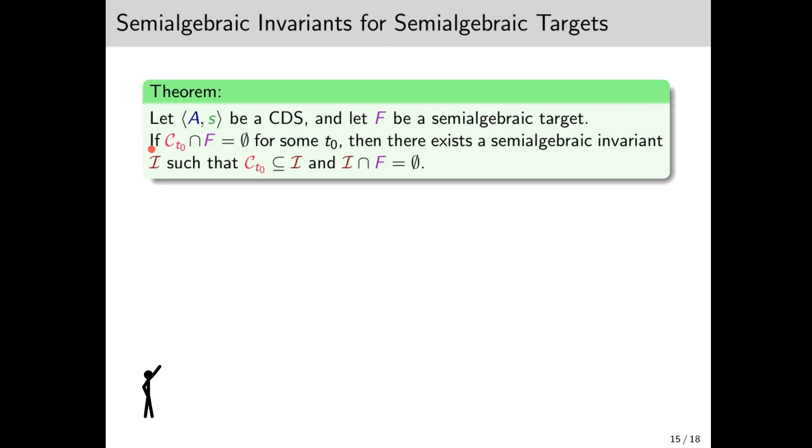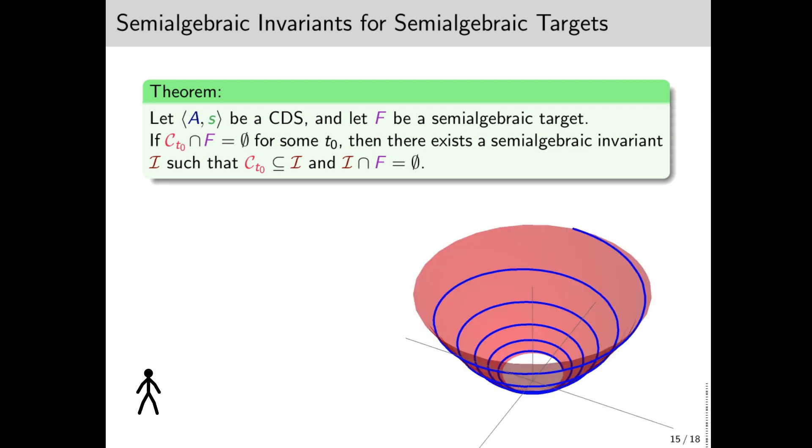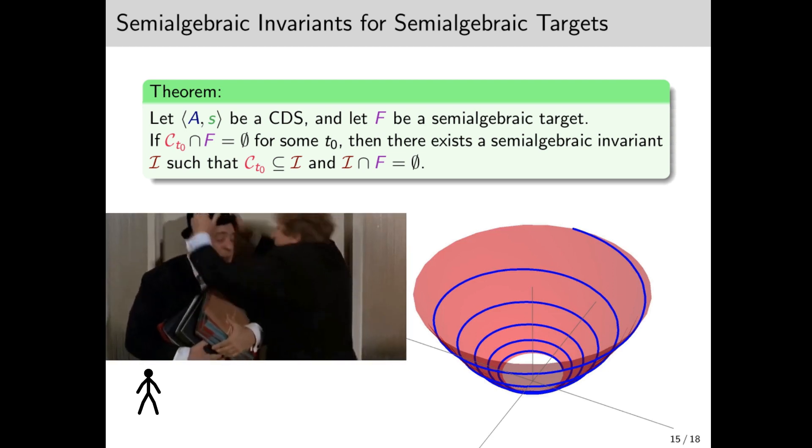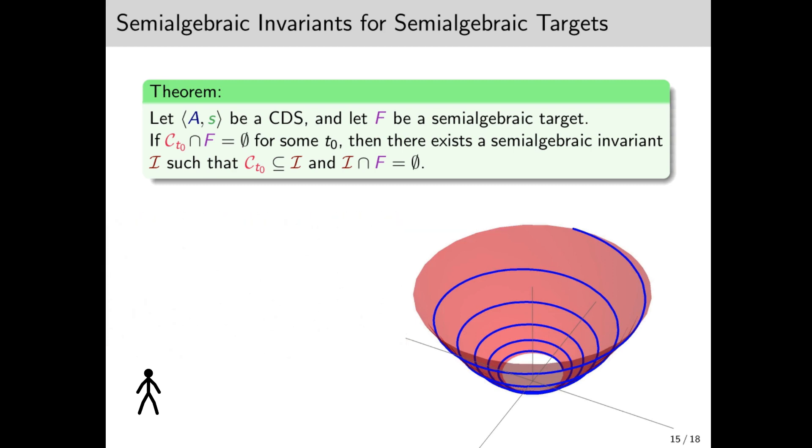And we have good news on this front. If C_{t₀} is disjoint from a semi-algebraic target, then we can also find a semi-algebraic invariant that is disjoint from it. Note, though, that this invariant is still only an eventual invariant. How do we construct this semi-algebraic invariant? Well, let's look at C_{t₀}. The reason it's not semi-algebraic is the curvature of the sides, which are defined by exponential functions and some polynomials. What we do to obtain a semi-algebraic set that contains this cone, is to simply take C_{t₀} and make it... FAT! Yes, exactly as Leo Bloom says, we make the cone FAT.